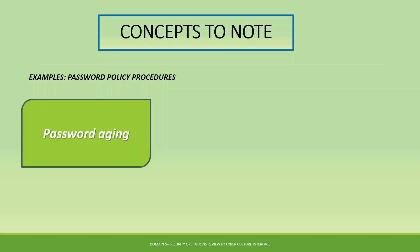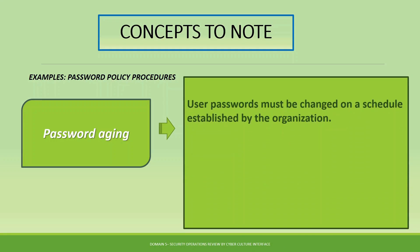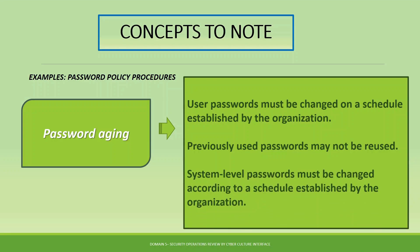Another example of password policy implementing best practice is password aging. Under password aging, policies could include requirements such as user passwords must be changed on a schedule established by the organization — for example, every four weeks, every month, or every two months. Additionally, previously used passwords may not be reused, and system-level passwords must also be changed according to an established schedule.